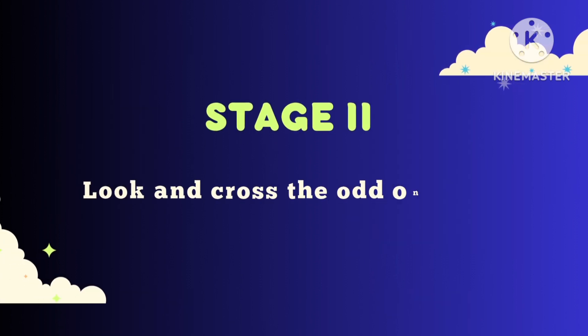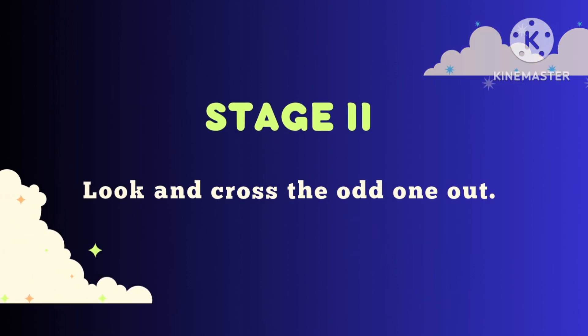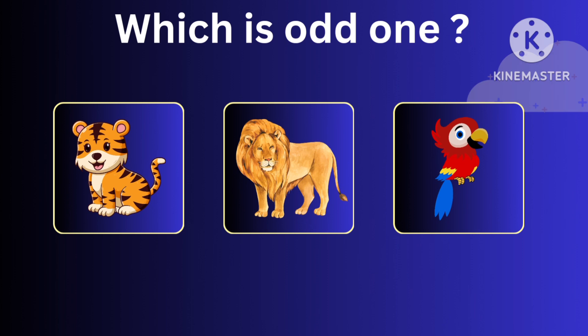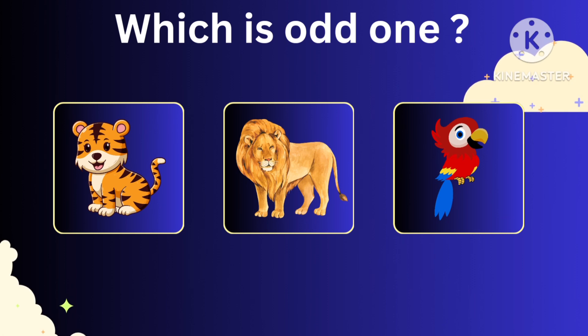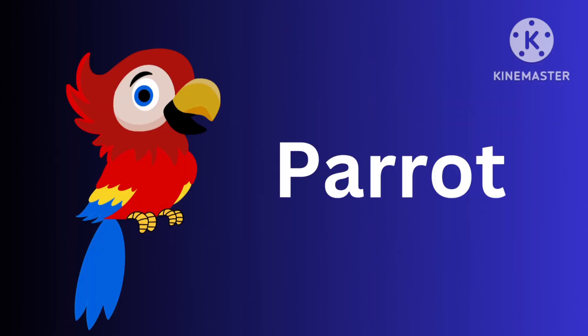Stage 2. Look and cross the odd one out. Which is the odd one? Tiger, Lion, Parrot. Parrot.